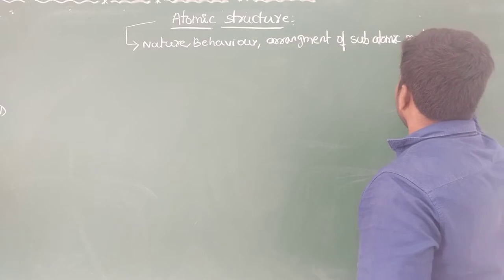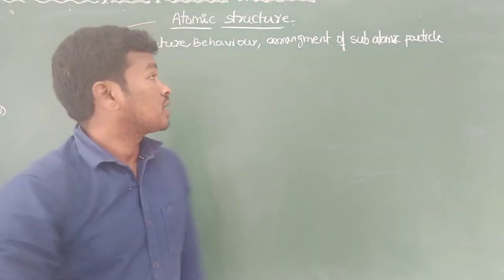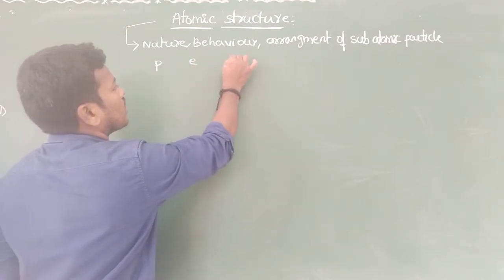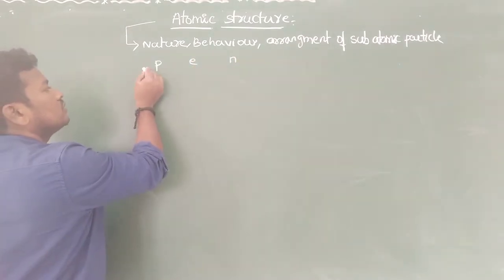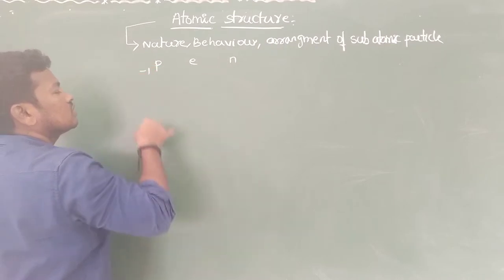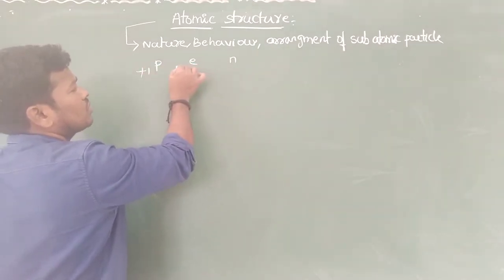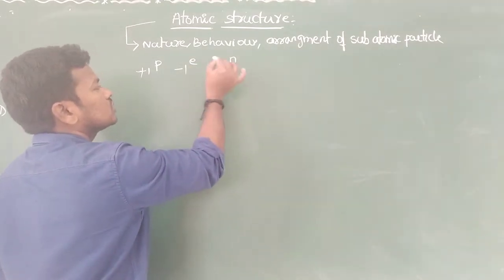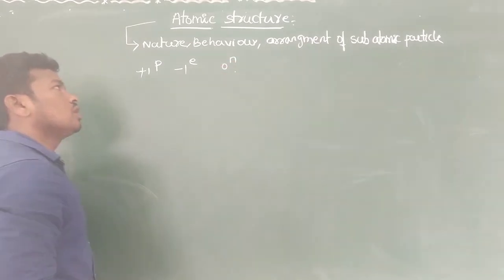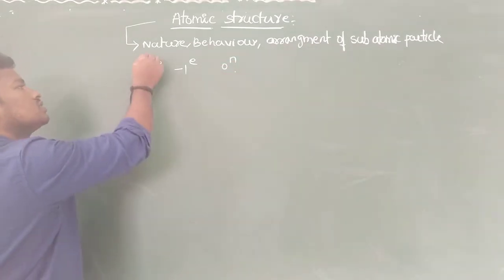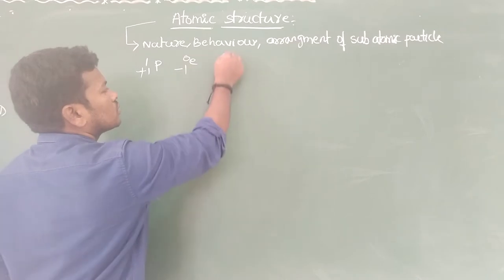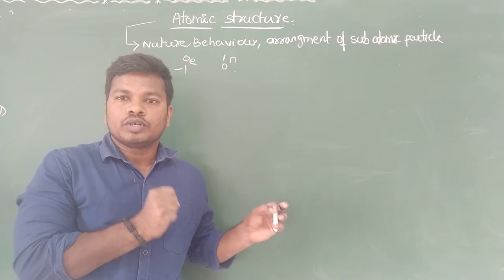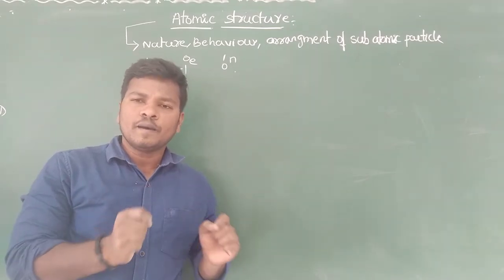What are the main subatomic particles? We have three subatomic particles: proton, electron, and neutron. Proton has a relative charge of plus 1, electron has a relative charge of minus 1, and neutron has a relative charge of 0. Proton has a relative mass of 1, electron is 0, and neutron is 1. In this video we are going to discuss the topic: discovery of the electron.